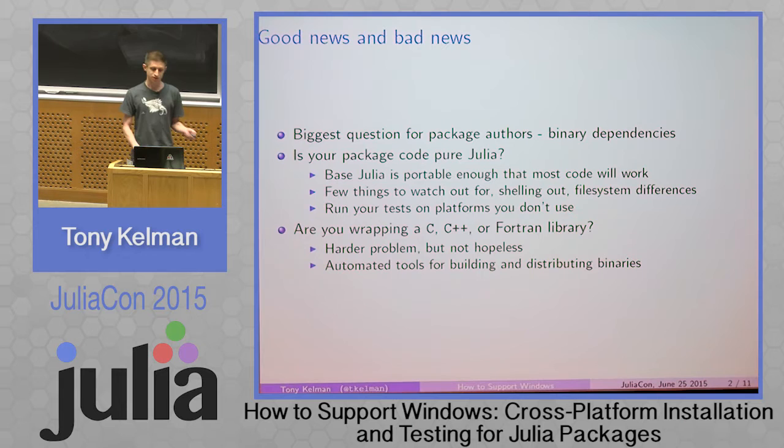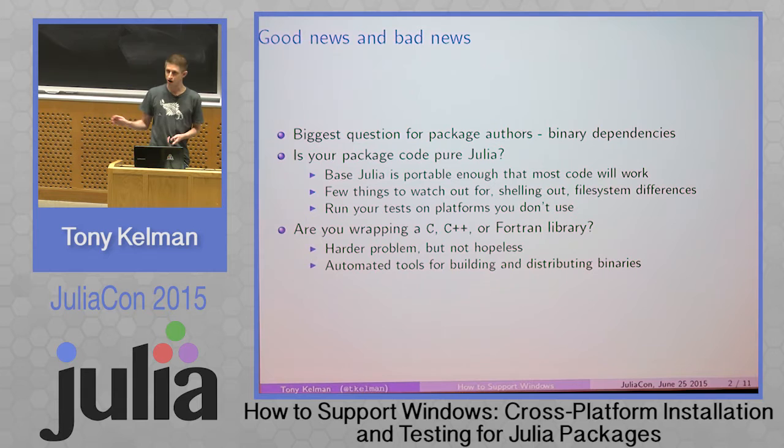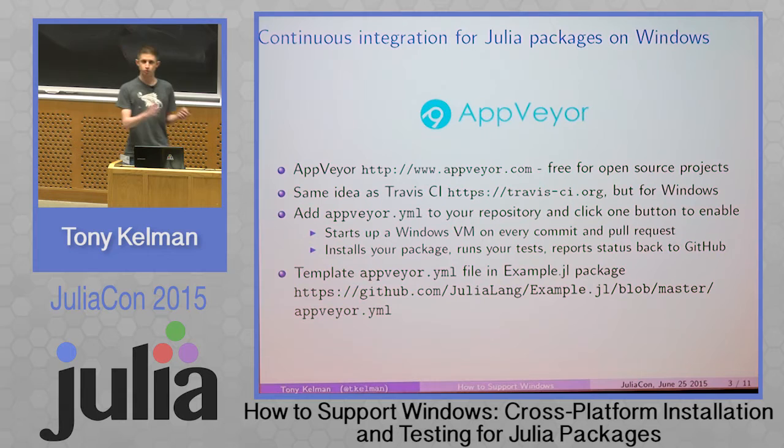If you're wrapping a C, C++, or Fortran library, that's a hard problem. The Python community has struggled with this for years. R sort of builds the world on CRAN and has very specific requirements that make things pretty difficult. It's not a hopeless problem though, and I'm going to talk about that in the second half. There are automated tools we've been leveraging heavily for building and distributing binaries, so you don't have to do everything by hand.